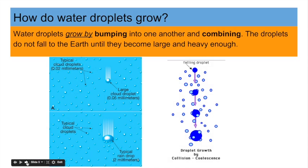How do water droplets grow? Water droplets grow by bumping into one another and combining. The droplets do not fall to the Earth until they become large enough or heavy enough to defy gravity. Here you can see a typical cloud droplet — very small, suspended in the air, not falling because of the updrafts. When they grow in size, they start to fall, and when they grow large, they combine with other water droplets on their way down to the Earth's surface, as you can see in the graphics.